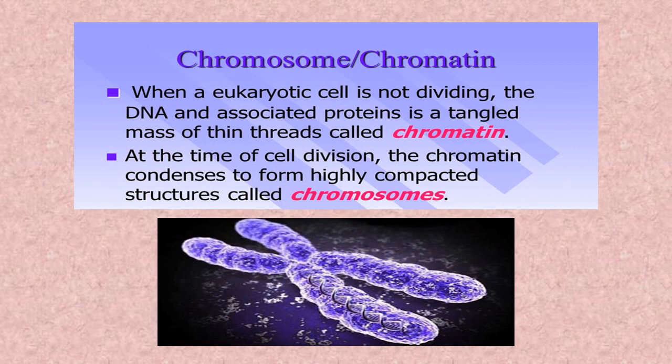Chromosomes and chromatin: when a eukaryotic cell is not dividing, the DNA and associated proteins exist as a tangled mass of thin threads called chromatin. At the time of cell division, the chromatin condenses to form highly compacted structures called chromosomes. This is the structure of chromosomes.